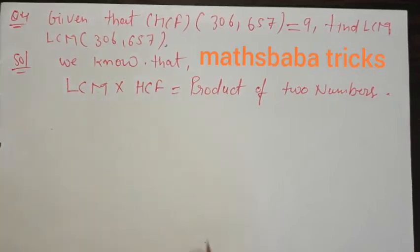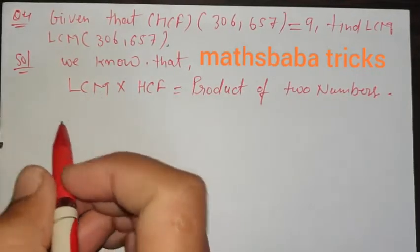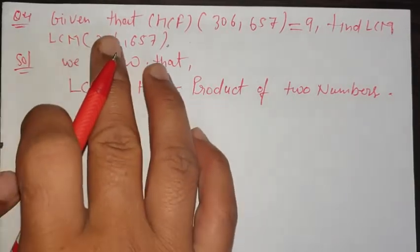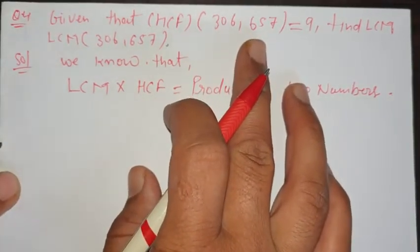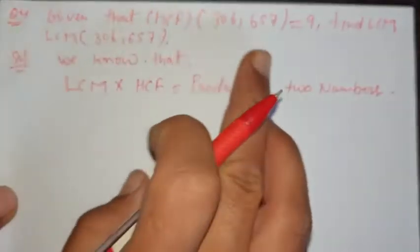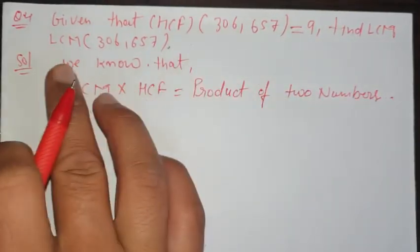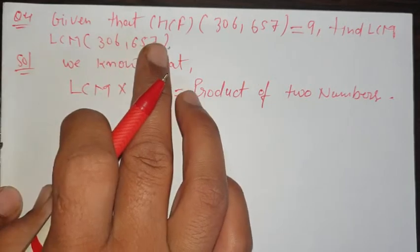Exercise 1.2, Chapter 1, Class 10th, question number 4 part 2. Question number 4 is given: HCF of 306 and 657 is 9. We have to calculate the LCM of 306 and 657.